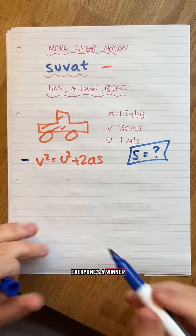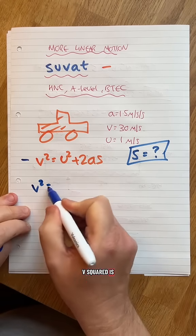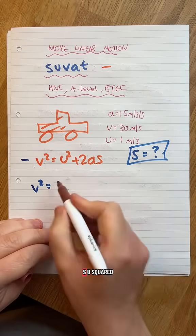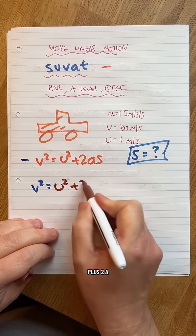Here's the formula. Everyone's a winner. V squared is going to be, get a different color pen. U squared, which is, hang on, we're going to find S. U squared plus 2AS.